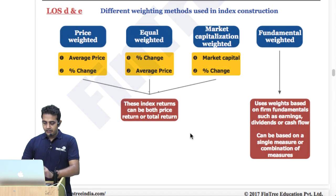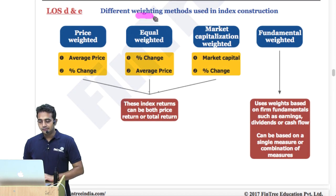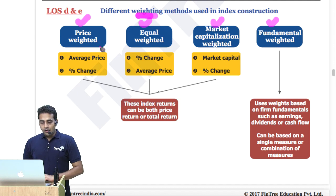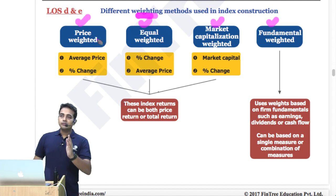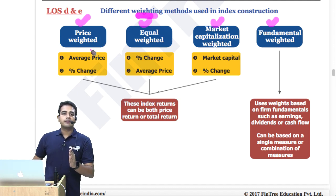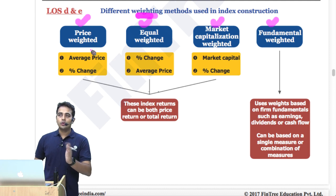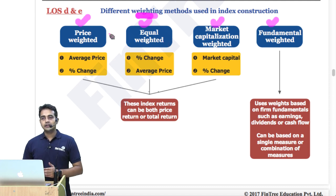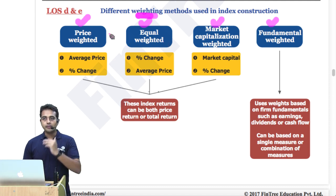Different weighting mechanisms: price weighted, equal weighted, market cap weighted, and fundamental weighted. Within each of them, we can have two types of index — a price return and a total return index. When we discussed this session originally, we noted there is an easier way to remember the formula if you remember the sequence.